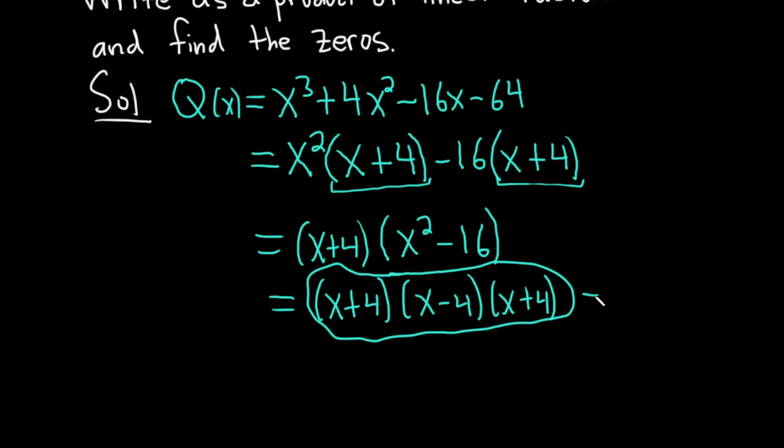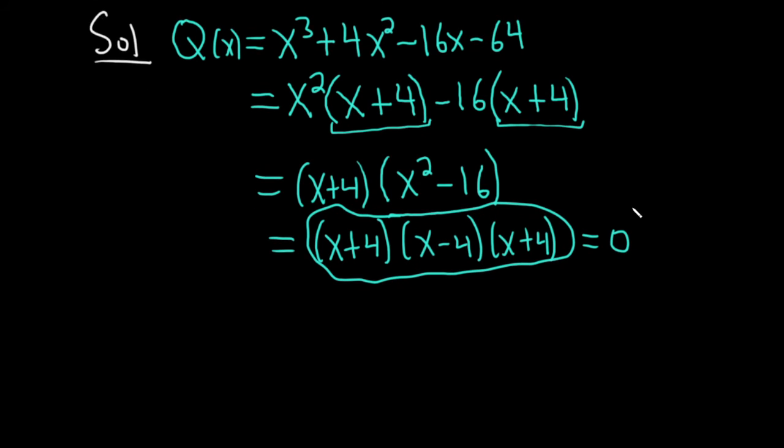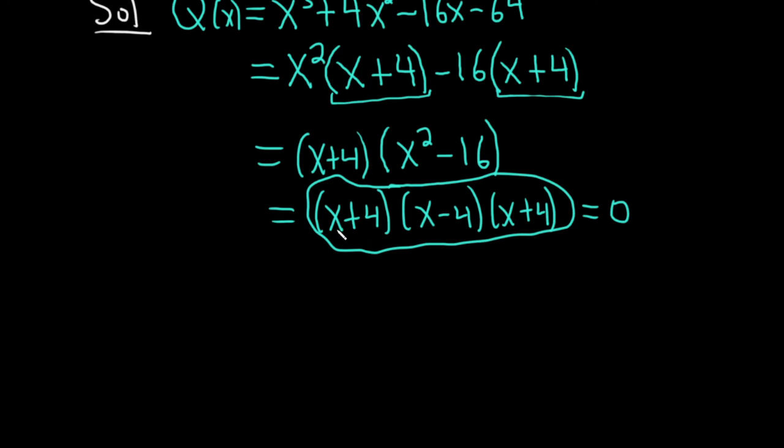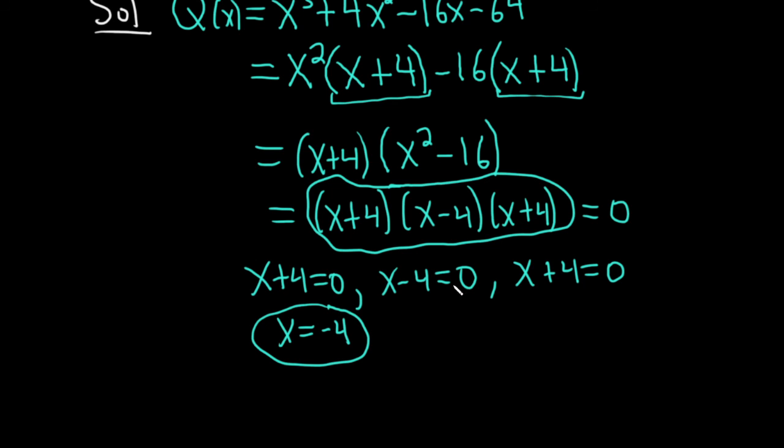To find the zeros, we basically set it equal to 0, and then we can see what the answers are right away. You set each factor equal to 0. Then x minus 4 equals 0, and x equals 4. x plus 4 equals 0, you subtract 4 here, so you get x equals negative 4. That's one of the answers. You add 4 here, so you get x equals 4. That's another answer.